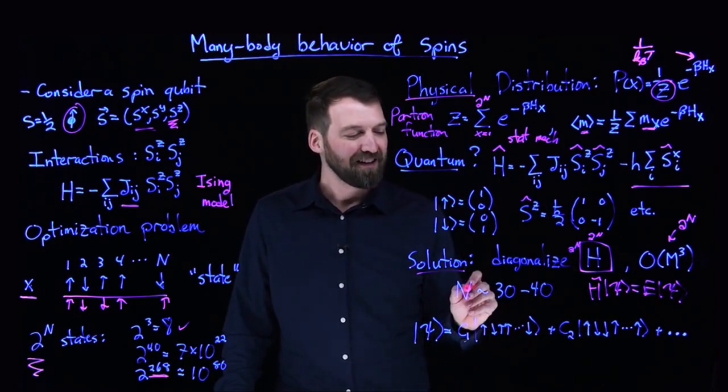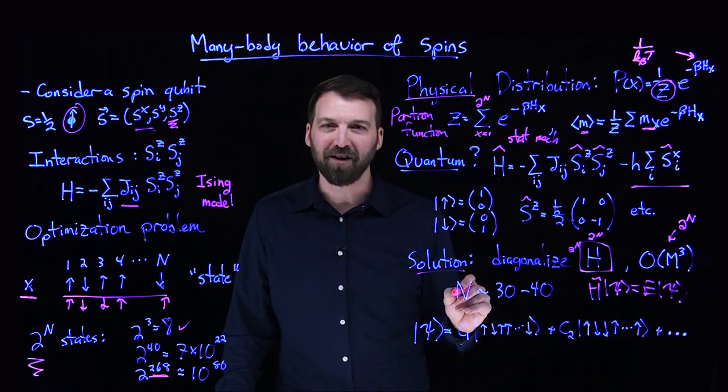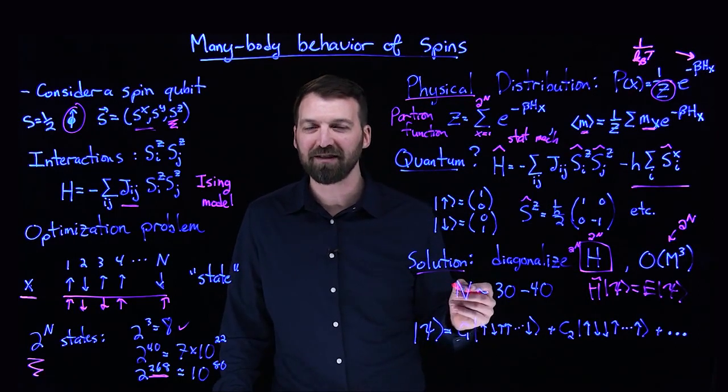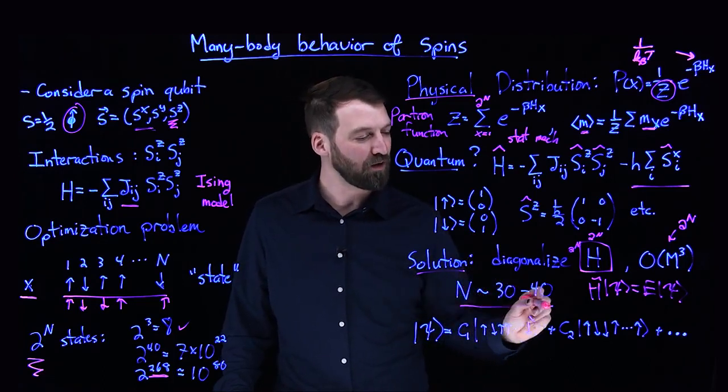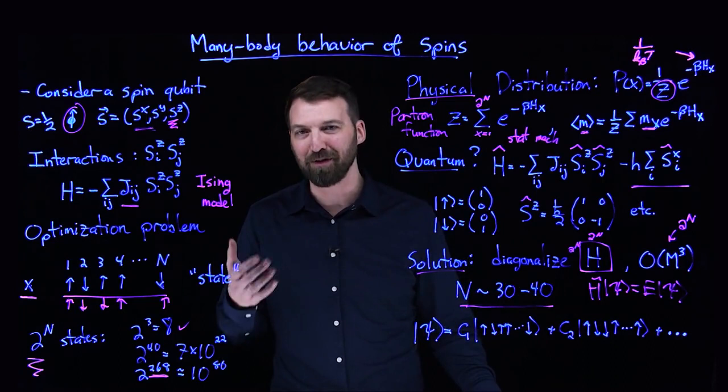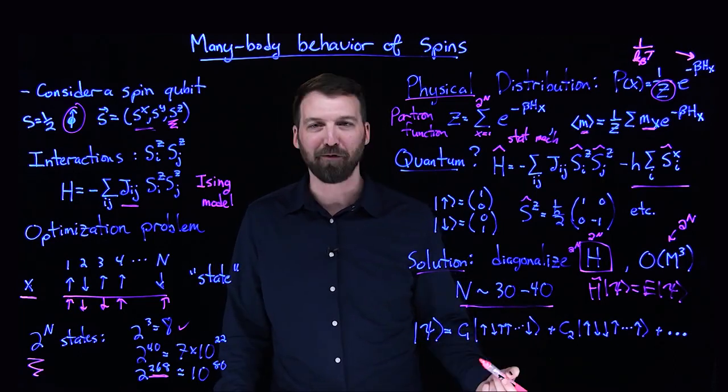In fact, it escalates so quickly that state-of-the-art diagonalization routines, which are run on problems of high symmetry, typically can only reach an n—a number of qubits—of 30 to 40.